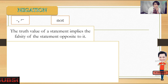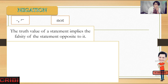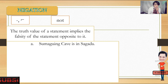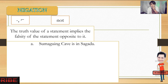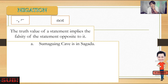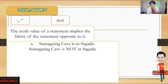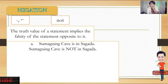If your statement is true, it will become false. And if your statement is false, it will become true. For example: 'Sumaging Cave is in Sagada.' Is this true? Yes, it's true. Sumaging Cave is located in Sagada. If we negate this statement: 'Sumaging Cave is not in Sagada.' The truth value now becomes false.